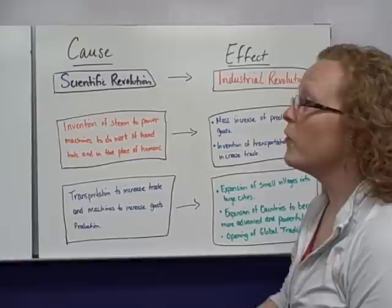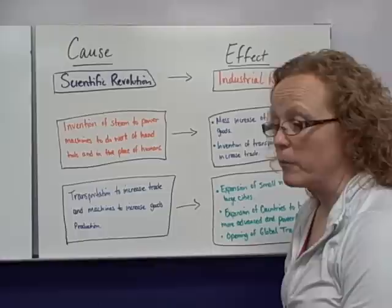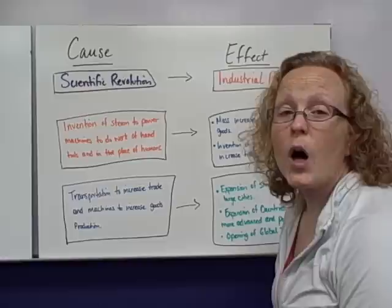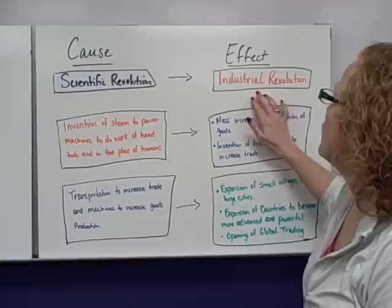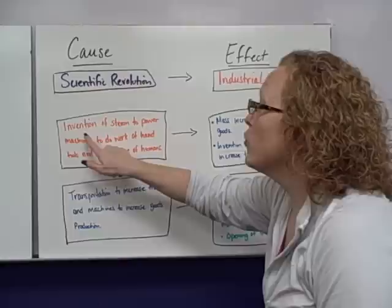Looking at cause and effect for the Industrial Revolution: first, the Scientific Revolution. As we've discussed in class before, the Scientific Revolution led to a great many things — not just medicines, but also machinery. With the Scientific Revolution, the Industrial Revolution came about.